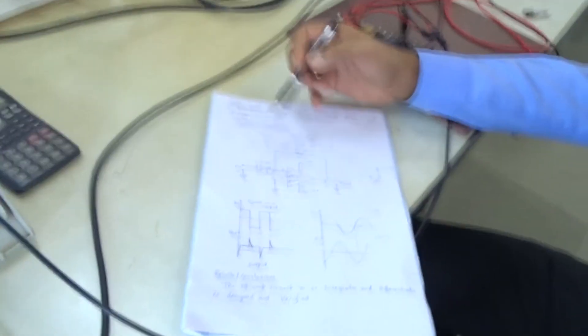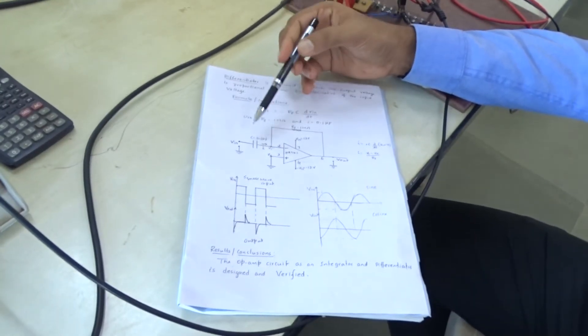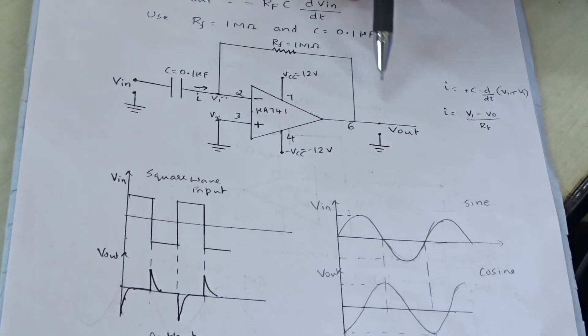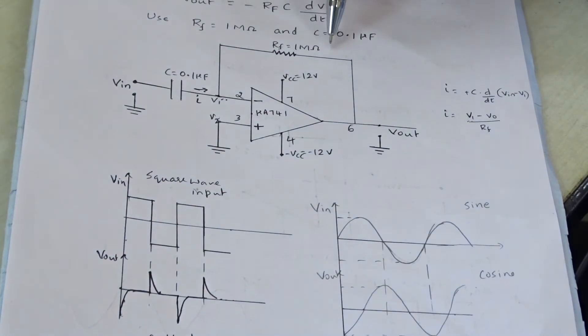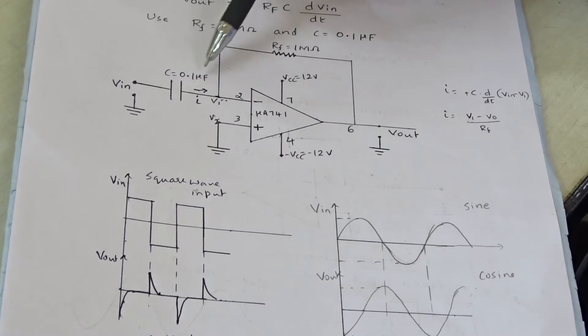Now I will explain the working of the differentiator circuit constructed using op-amp IC 741. This is the circuit diagram of the op-amp used as a differentiator. The components connected are: one capacitor connected to the input side acting as the input capacitance, and one feedback resistance RF with a value of 1 megaohm. The capacitance used is 0.1 microfarad.